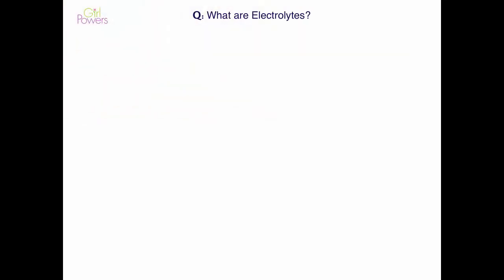What are electrolytes? Electrolytes are substances that separate into electrically charged ions in a liquid solution — that's the technical definition. In your body, electrolytes are charged minerals or ions able to transmit electrical impulses. These electrical impulses are how your body communicates, or how cells send signals to one another. So it's like your body's own electrical system.